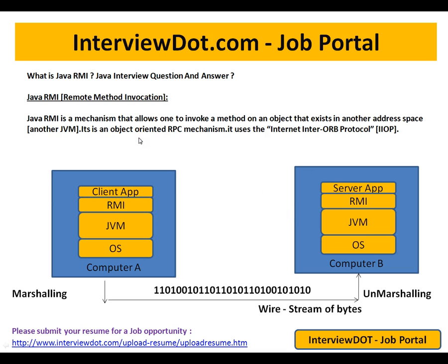It is an object-oriented RPC — remote procedure call — mechanism. It uses the Internet Inter-ORB Protocol (IIOP). So say for example you have your client application; RMI is the library which is going to help us connect with a different JVM in a different computer. The client application will have a proxy, and the proxy acts as the server in the local machine. From the proxy we will have the server IP address and port number, where the port number identifies the exact process on the remote computer.